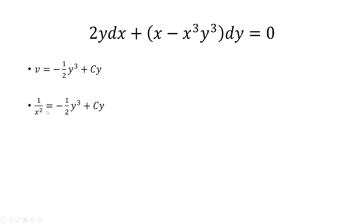Solving for x, we just take the reciprocal of both sides, and then take the square root. Notice, because it's x squared, we need both the plus and the minus. And so we have plus or minus the square root of 1 over negative 1 half y cubed plus a constant times y. And that is my answer.